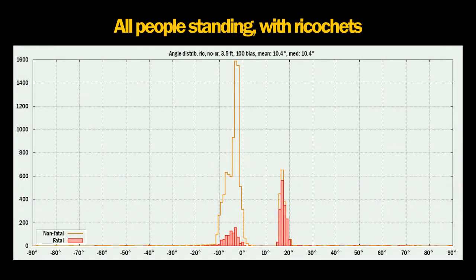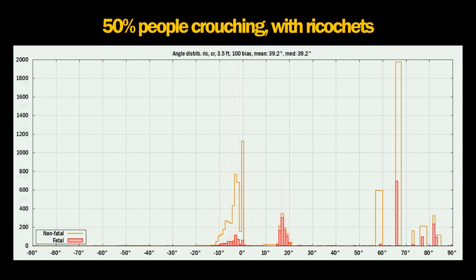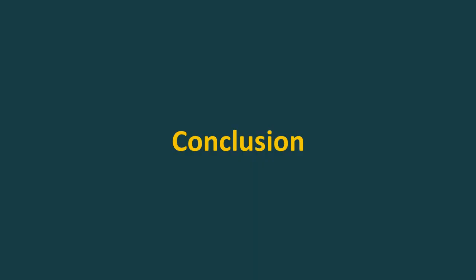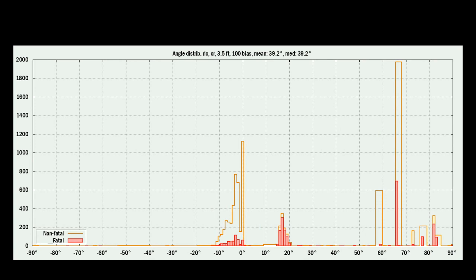The ricochets cause proportionally more non-fatal wounds compared to direct impacts. Now a test with ricochets on and half of the people crouching. This adds a widespread random group of angles on the right. With half of the upper bodies now being more parallel to the ground, direct impacts and ricochets can enter from much steeper angles. Even a perfect 90-degree angle is possible, though not very likely. The tests show that steep wound angles are easily explained by ricochets and people not standing upright.